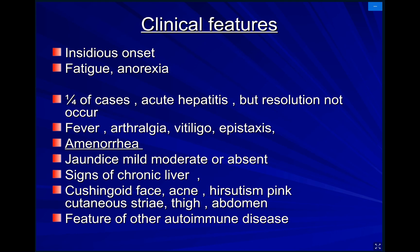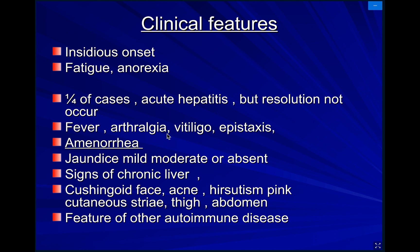How will the patient be presented? The onset is insidious, occurring gradually, starting with fatigue and anorexia. Part of the cases occur as an acute hepatitis, but the resolution is not complete. It will be presented like an acute hepatitis — fatigue, anorexia, jaundice — but it is not resolved, so we will think of other causes.